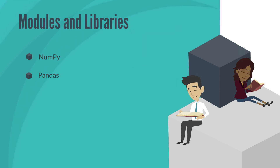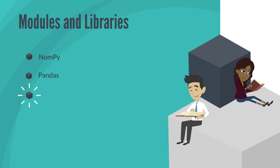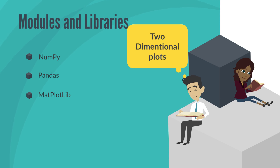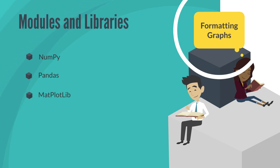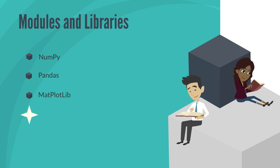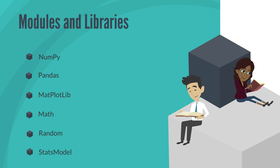If you are wondering about the name of the package, it is derived from the econometric term panel data. Another important module we will use extensively is Matplotlib, a two-dimensional plotting library specifically designed for data visualization. It contains a large set of tools for formatting plots. Other modules we will use are Math for mathematical calculations, Random which invokes the random number generators, and Statsmodels which contains an extensive library of descriptive statistics, plotting functions, regressions, and much more.